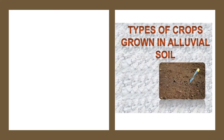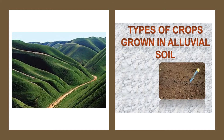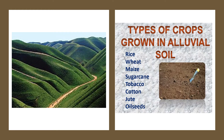The rivers of the northern plains bring with them large quantities of silt or alluvium, which gets deposited on the lands around the rivers. This soil is very fertile and is called alluvial soil. Alluvial soil is especially good for the cultivation of rice, wheat, maize, sugarcane, tobacco, cotton, jute and oil seeds.